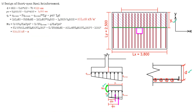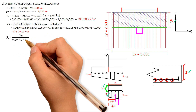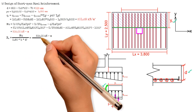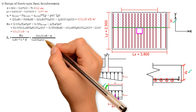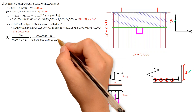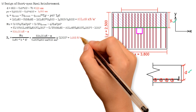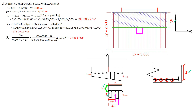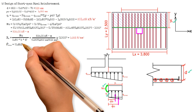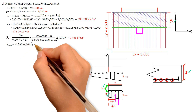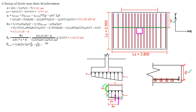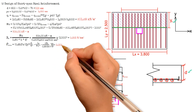We then calculate r sub n, which equals moment Mu 502 kN·m divided by 0.9 times width b 3800 mm times effective depth d 515 mm squared, giving 0.553 N/mm². After that, we solve for the actual steel ratio using the formula 0.85 times fc prime over fy times [1 minus square root of (1 minus 2 r sub n divided by 0.85 fc prime)], and the result is 0.00135.